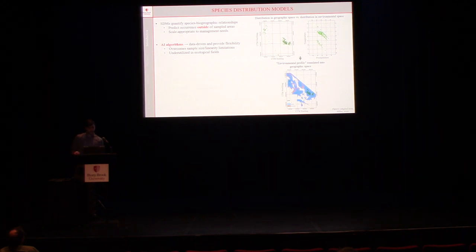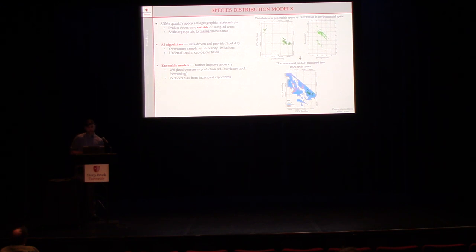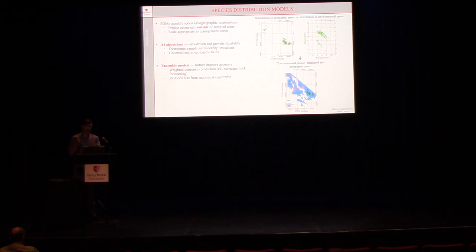An important aspect of this framework that makes it very novel is that we're entirely relying on AI — artificial intelligence algorithms. These are data-driven and provide a lot of flexibility compared to traditional statistical modeling. Particularly, they help you overcome limitations with sampling size and expectations of linearity. While these are used in many other fields, they're very underutilized in ecological fields. We also use ensemble modeling: a weighted consensus prediction based on some accuracy metric from multiple AI algorithms, creating a consensus prediction — like what you see with hurricane track forecasting, where you bring the best parts of multiple models together to get a final, accurate, reduced-bias prediction.